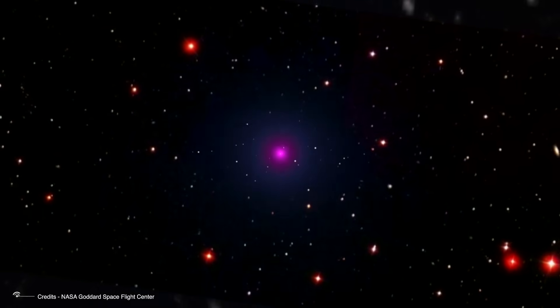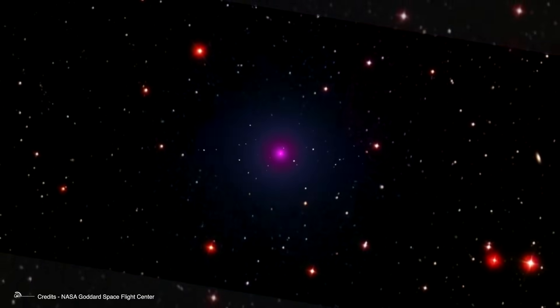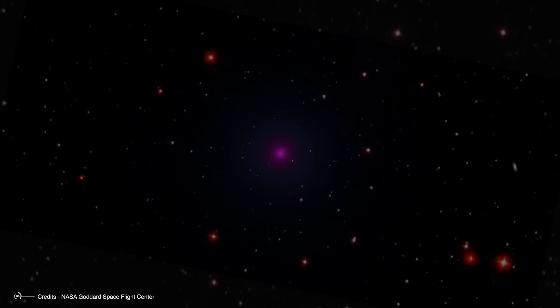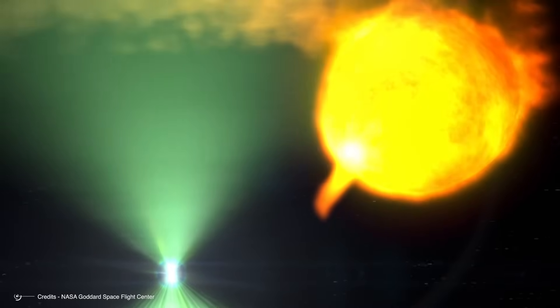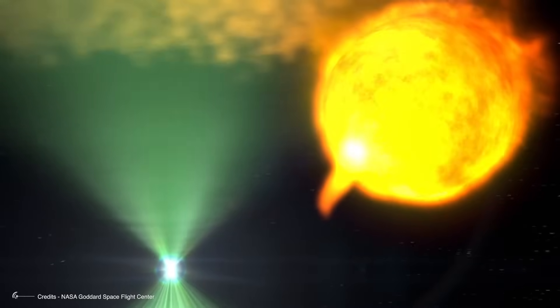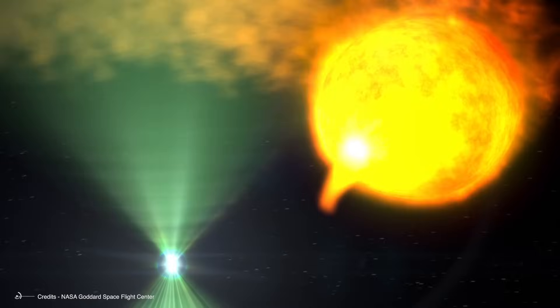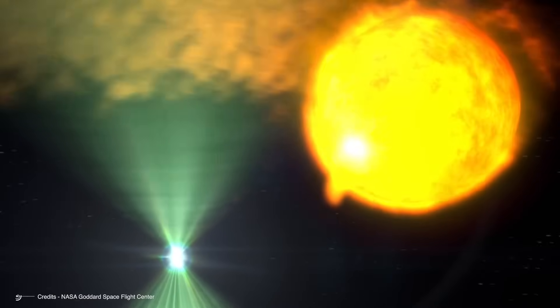The impending demise of the companion star is thus directly linked to J0952-0607's fate. Each pulsar rotation strips away more material, each orbit brings more mass to the neutron star,